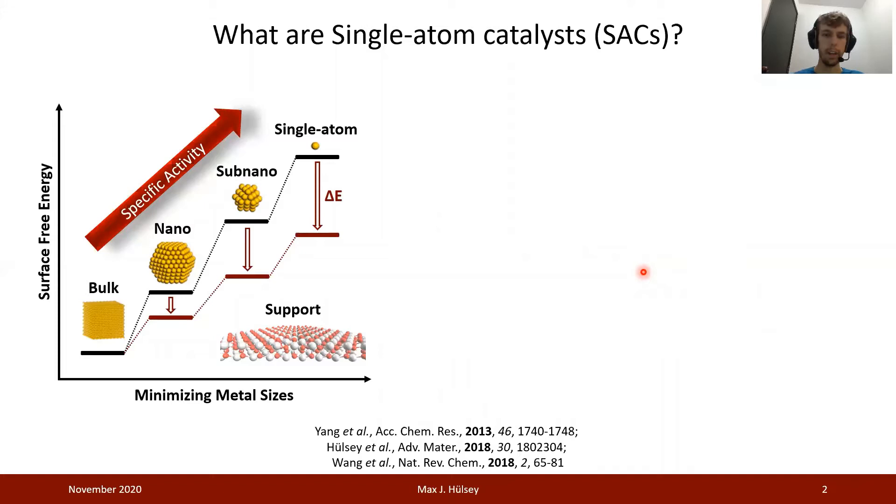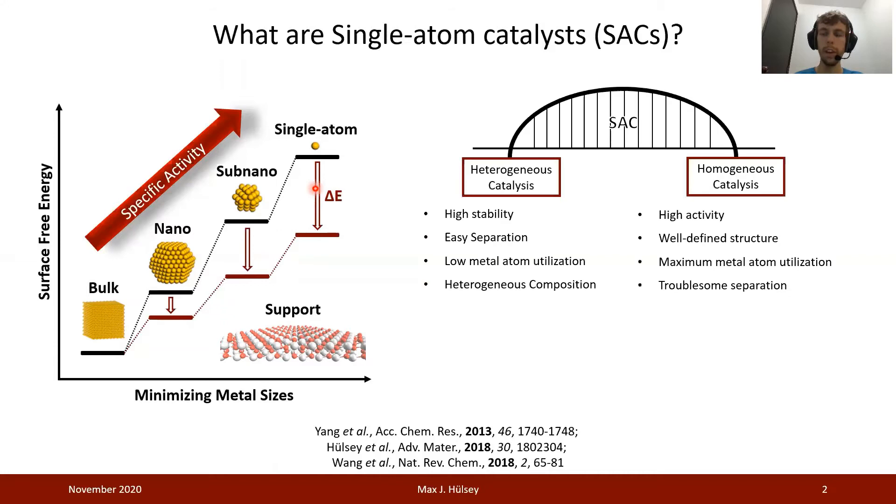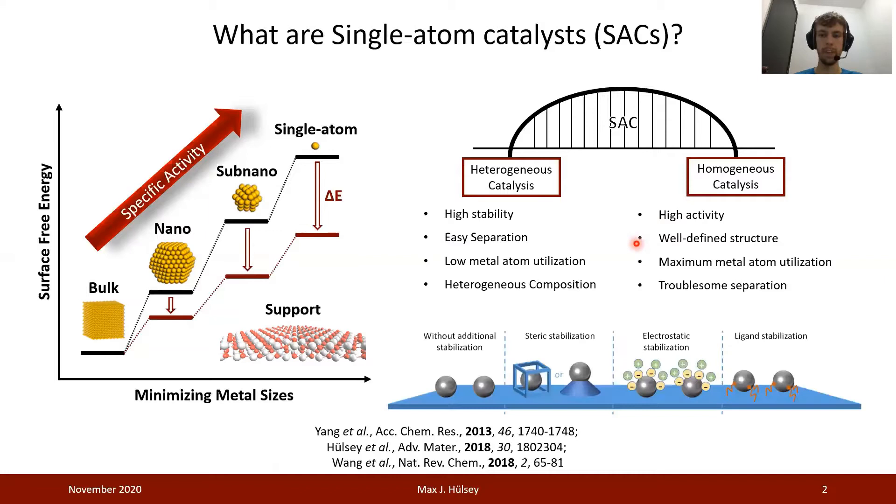Single-atom catalysts are reached when we go from bulk to nano and sub-nanostructures. Once we reach this ultimate dispersion, the surface free energy is so high that we need to offer a suitable support to stabilize those single-atom catalysts. Single-atom catalysts can be seen as a bridge between heterogeneous and homogeneous catalysts, combining high stability and easy separation with well-defined structure of the active site, as well as maximum metal atom utilization.